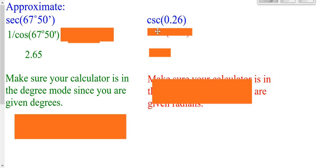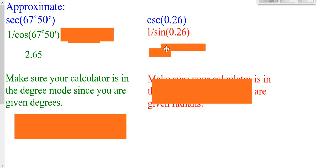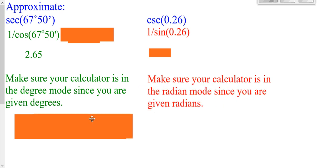For cosecant — cosecant is 1 over sine, so you're going to type in 1 over sine. However, you don't see any degree symbol, so you know you're dealing with radians. Make sure your calculator is in radian mode, switch it, type this in, and you should get about 3.89.